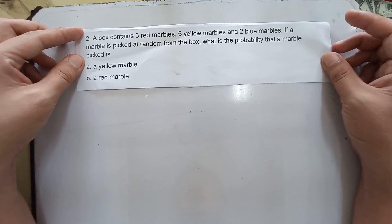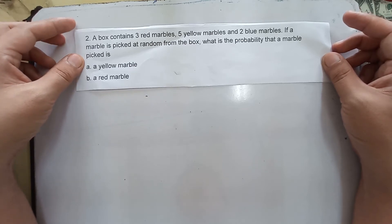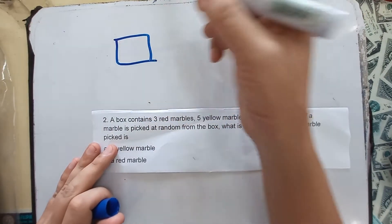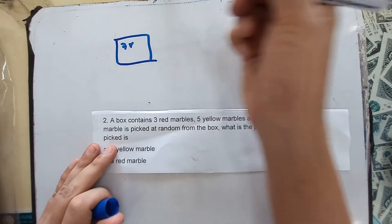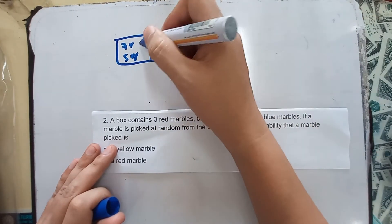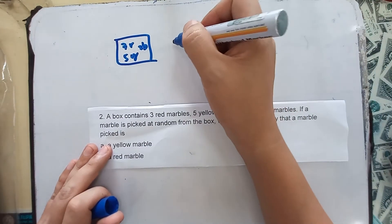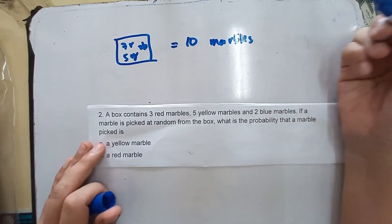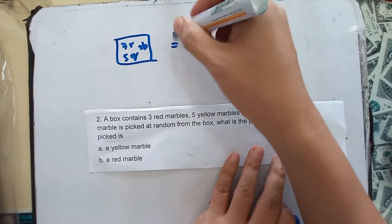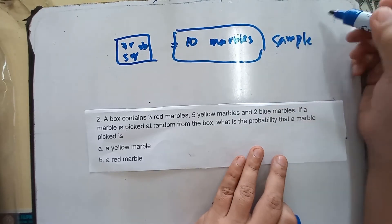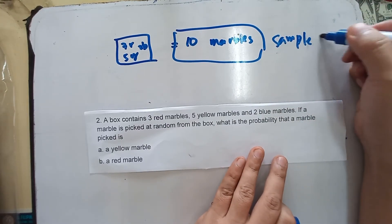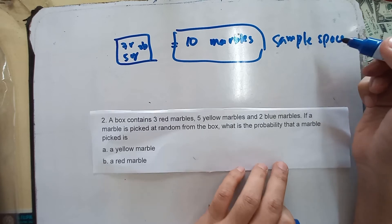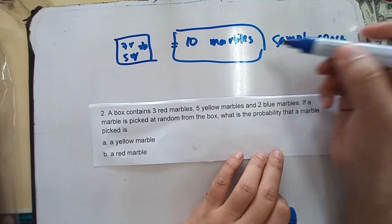Let's answer first letter A: what is the probability that a marble picked is a yellow marble? In the box, there are three reds, five yellows, and two blues. So there are ten marbles inside the box. That means ten is your sample space, because there are ten marbles inside the box. This is your sample space. Now you have your sample space — let's get what our event is.